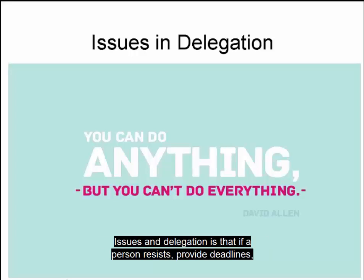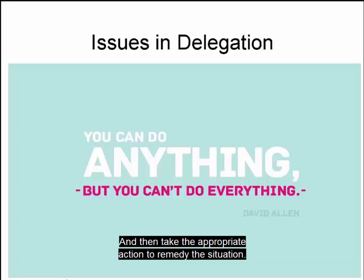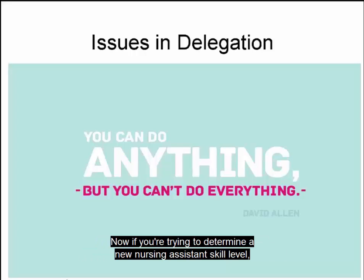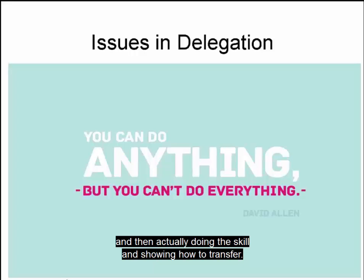If a person resists, provide deadlines. Avoid over-supervising, and first assess the reason for the resistance or refusal to perform a specific task, then take the appropriate action to remedy the situation. Remember that if a patient has not been assessed by the nurse, delegation cannot occur. If you are trying to determine a new nursing assistant's skill level, directly observe them perform a task first, then discuss the outcome. Asking them to explain a procedure is not the same as performing the action correctly and safely — there is a difference between saying how to transfer and actually doing the skill.